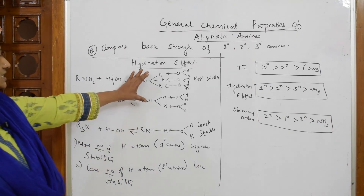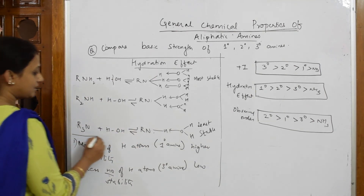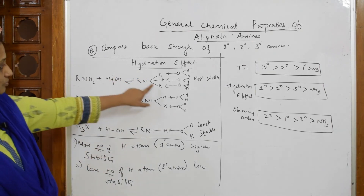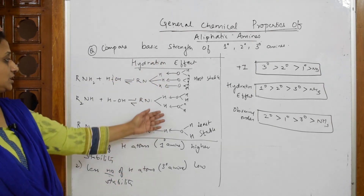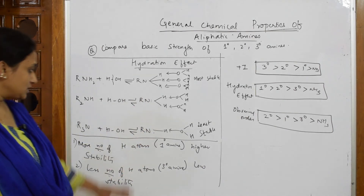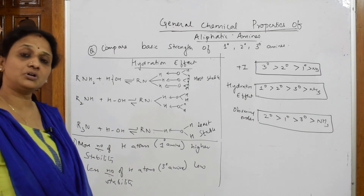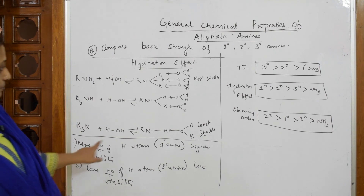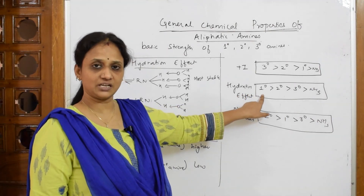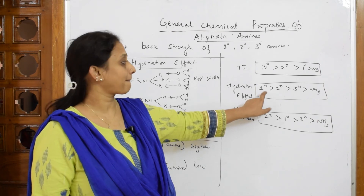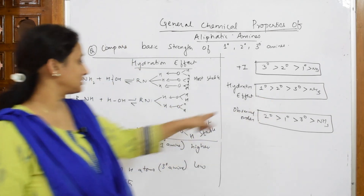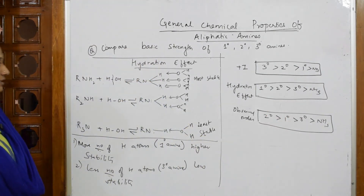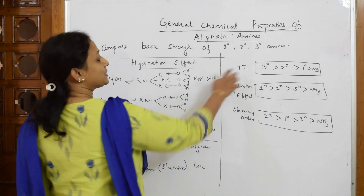Based on the hydration effect: primary forms three hydrogen bonds, secondary forms two, and tertiary forms only one. This whole concept of forming bonds with water molecules is called the hydration effect. Because of this, primary has three stabilizing factors and is more basic, then secondary with two, then tertiary, and ammonia is last.